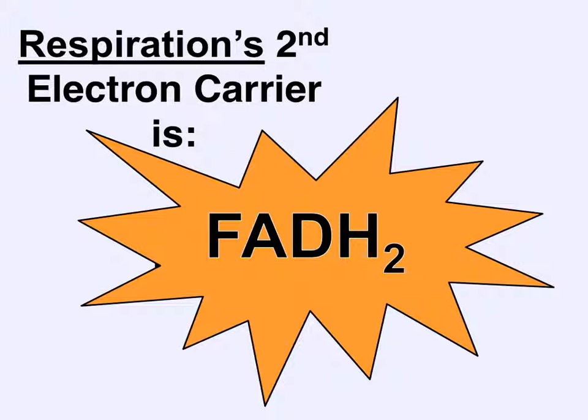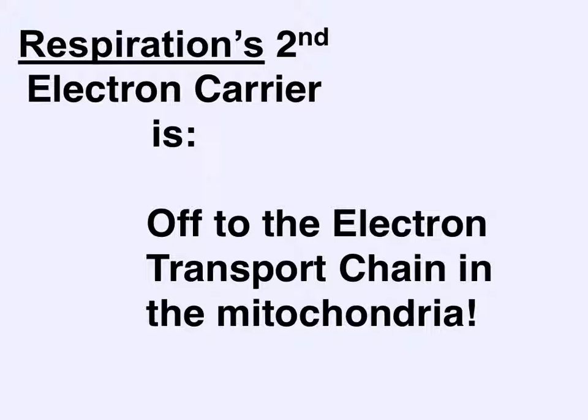FADH2 is actually produced during aerobic respiration, so it doesn't have the option of going to anaerobic respiration. FADH2 will travel from part of the mitochondria into the electron transport chain, where it'll help produce a lot of ATP. Since it's already in the mitochondria, FADH2 will stay there to produce that extra ATP.